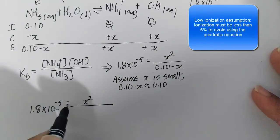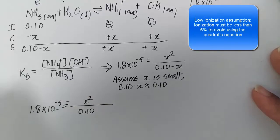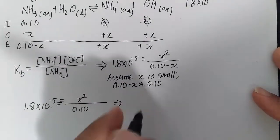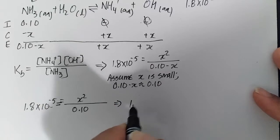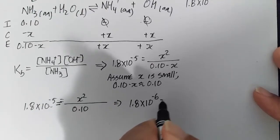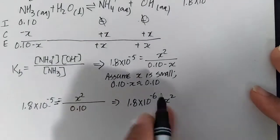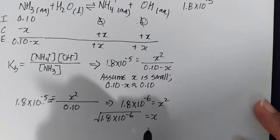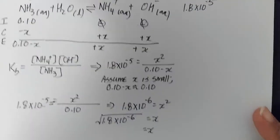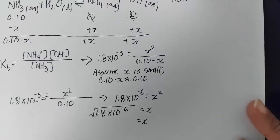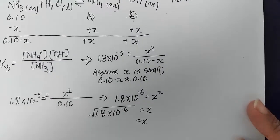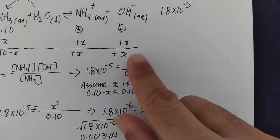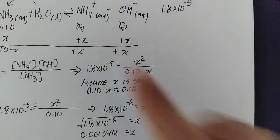0.10 times 1.8 times 10 to the minus 5 is 1.8 times 10 to the minus 6 equals x squared. So x equals the square root of that. On my calculator I'm getting 0.00134. You have to put the units here because it is a molarity. The value of x is the same as our OH- and the same as our ammonium ion.